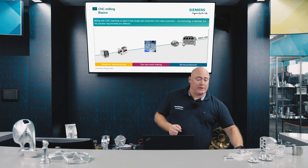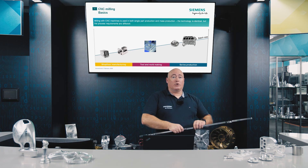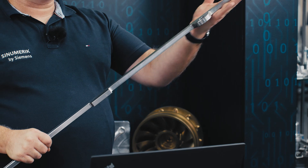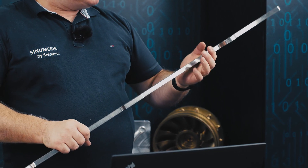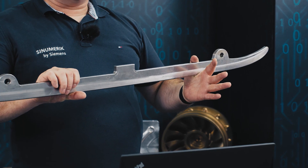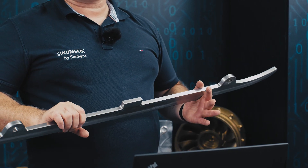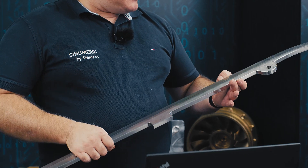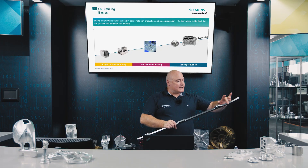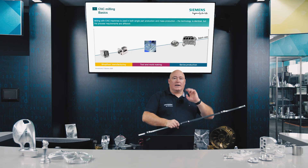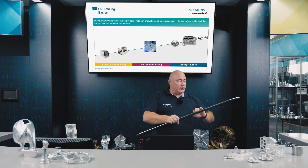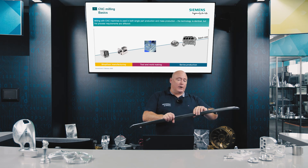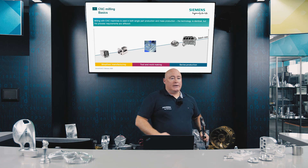Another good example of mold and die making and job shop-based programming are the runners of a world champion bobsled. These are unique single parts, prototypes, or work pieces produced in minimum batch sizes. On one hand, we have normal 2.5D contours, but the rounded edges and transition to the running surface are typical mold and die making contours.